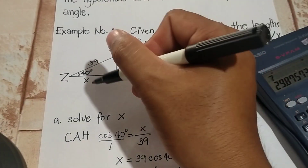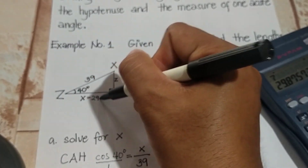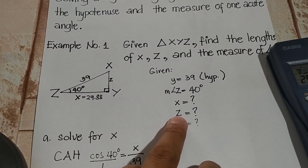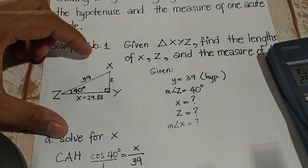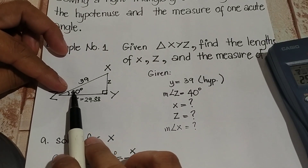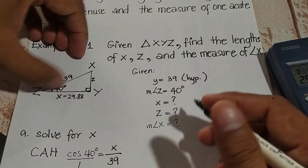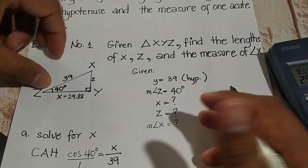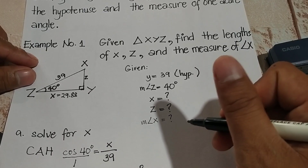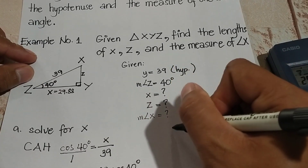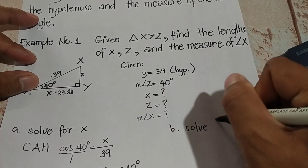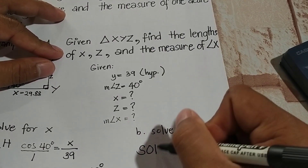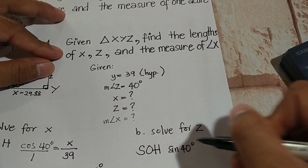So we're done solving for the length of side X — that is 29.88 units. Now let's move on to the length of side Z. Side Z with respect to angle 40 is the opposite side, and 39 is the hypotenuse, so we'll be using sine.